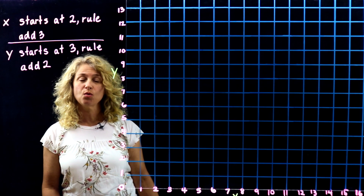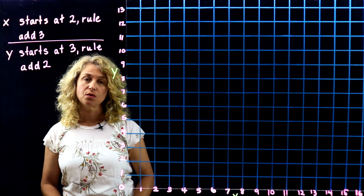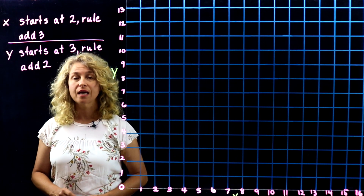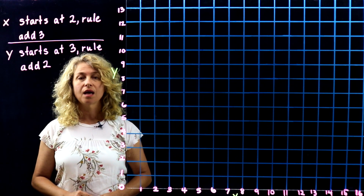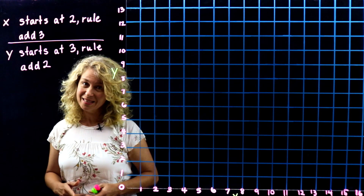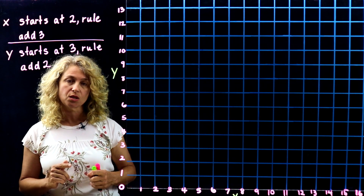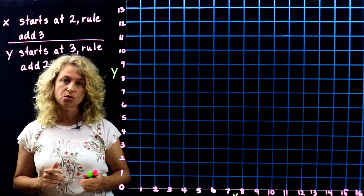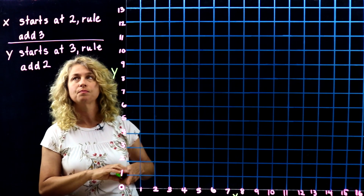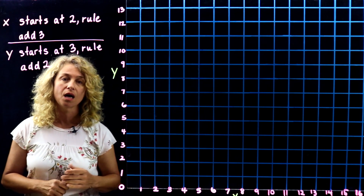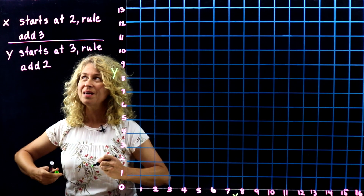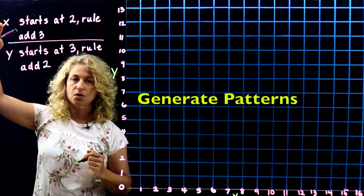Today we're going to learn how to generate two patterns, take those two patterns and find corresponding terms, then transfer those into ordered pairs and graph them. It seems like a lot, but it's all going to fall into place.